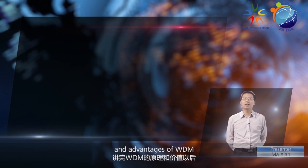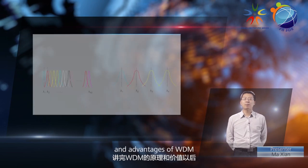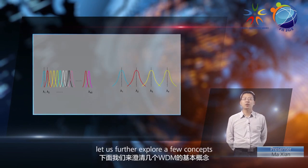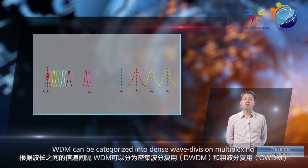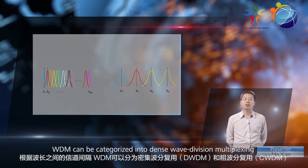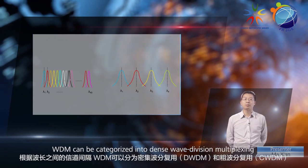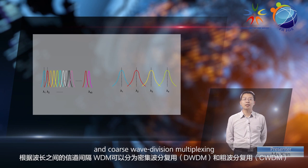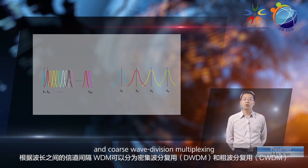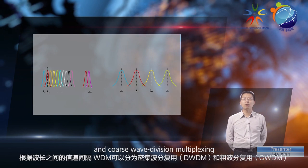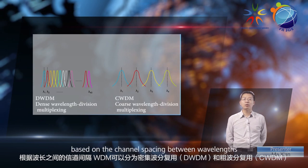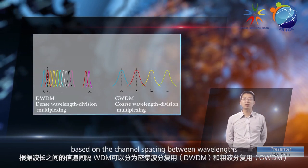Now that we've been introduced to the principles and advantages of WDM, let's further explore a few concepts. WDM can be categorized into dense wave division multiplexing, DWDM, and coarse wave division multiplexing, CWDM.